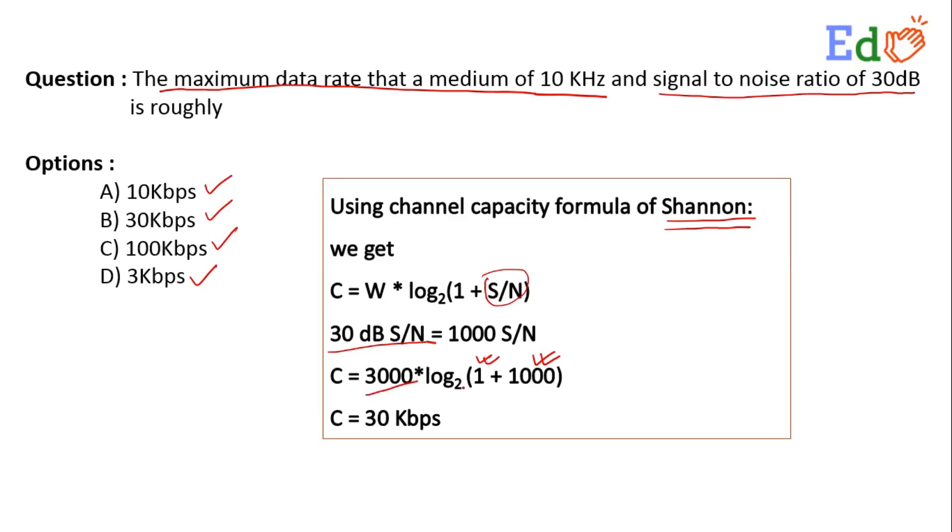So now what is happening? 2 to the power of... you know that 2 to the power of 10 is equal to 1024. We know that 2 to the power of 10 is equal to 1024 and this is my 1001, so the value will be 2 to the power of 9 point something.